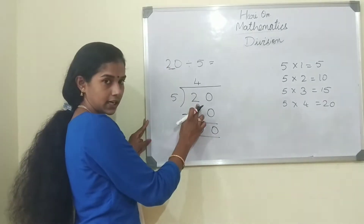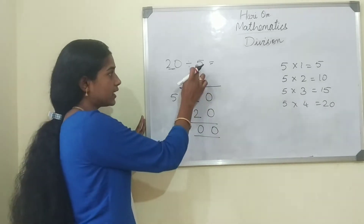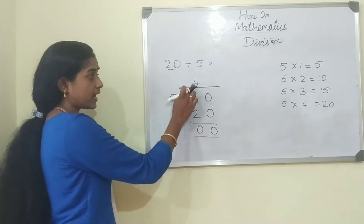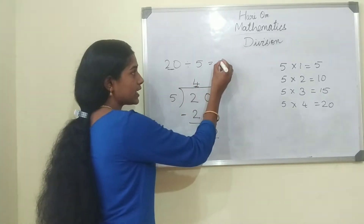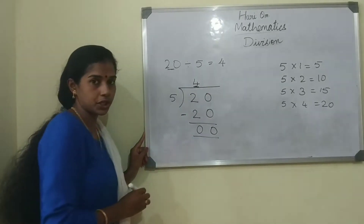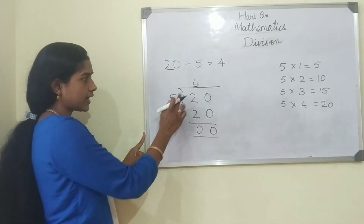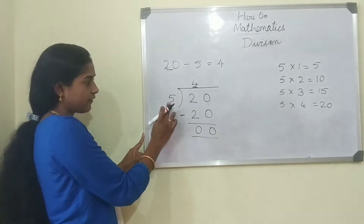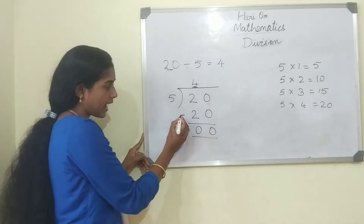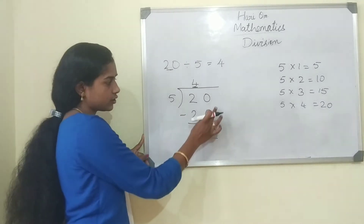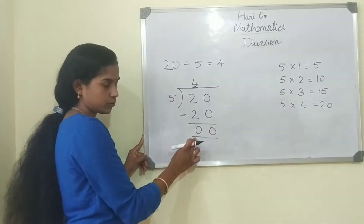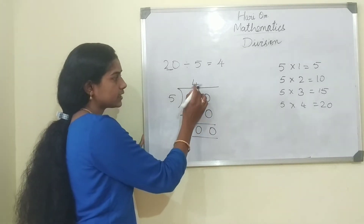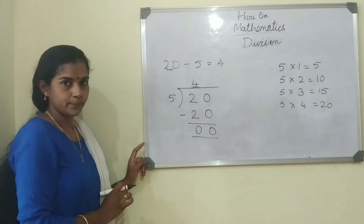So 20 we write over here as the dividend, and the divisor over here. 5 how much are 20? 5 fours are 20, so 4 is the answer — this is the quotient. We write 20 again below and subtract it: 0 minus 0 is 0, 2 minus 2 is 0, so 20 minus 20 is 0. The answer — the quotient — is 4.